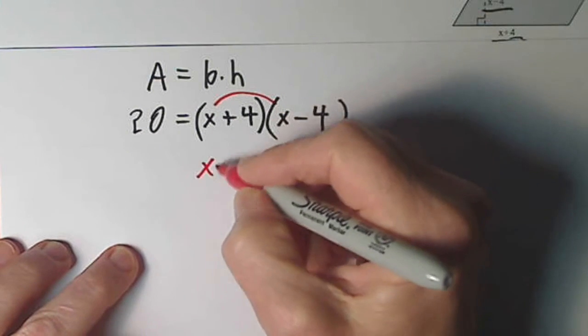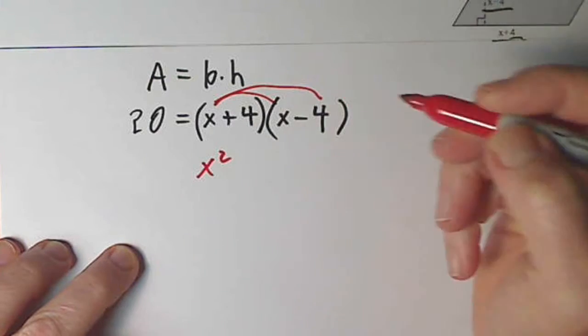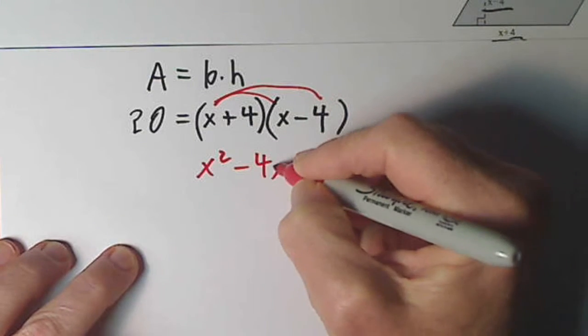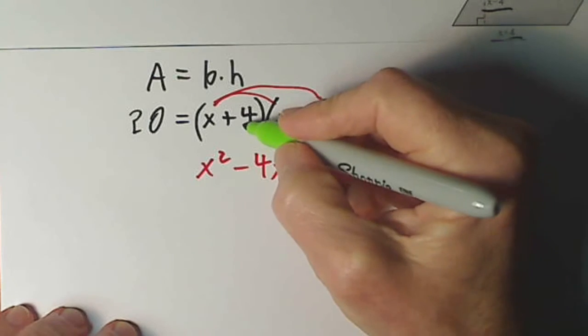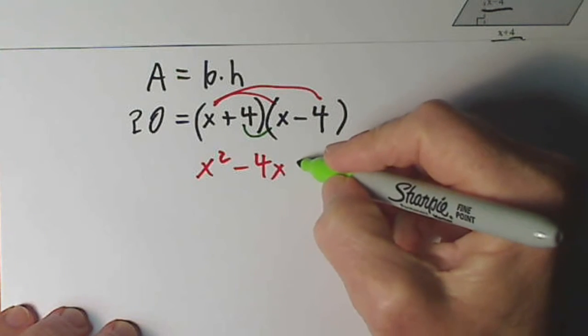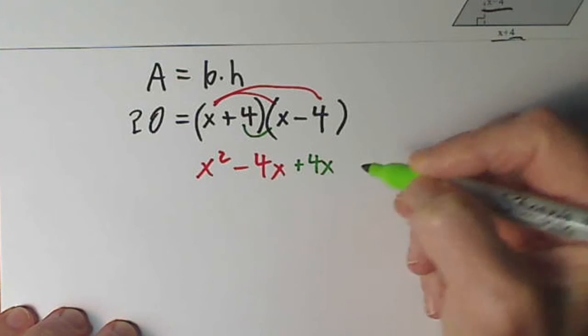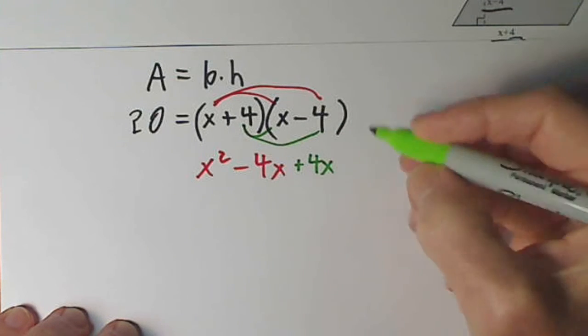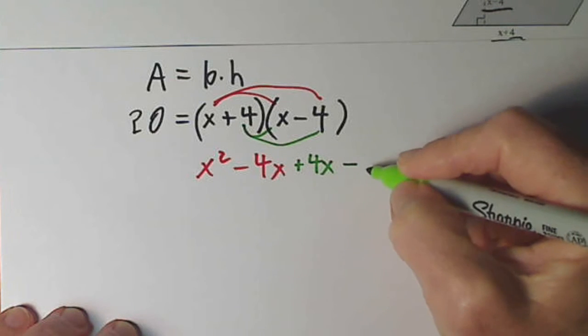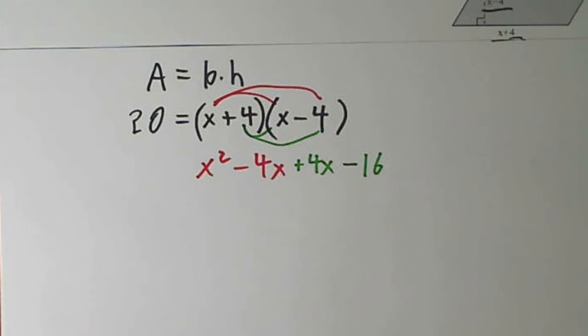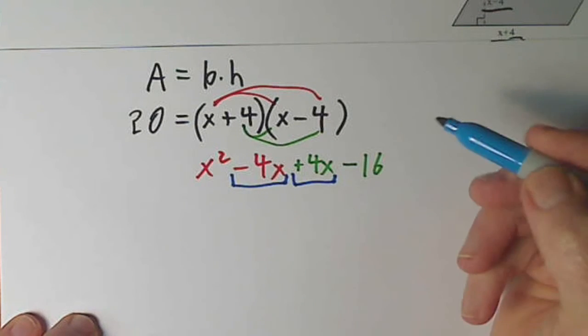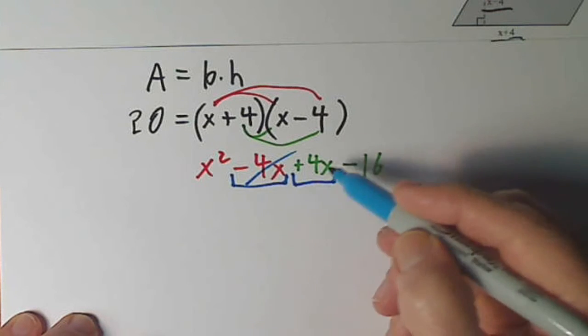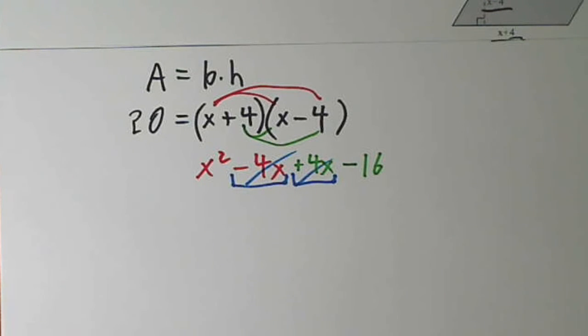x times x would give us x squared. x times negative 4, negative 4x. Hitting the inside too. 4 times x would be plus 4x. 4 times negative 4 would be negative 16. I can combine like terms. Notice what happens with these two middle terms. They cancel out. Negative 4x, positive 4x. So they're basically gone.